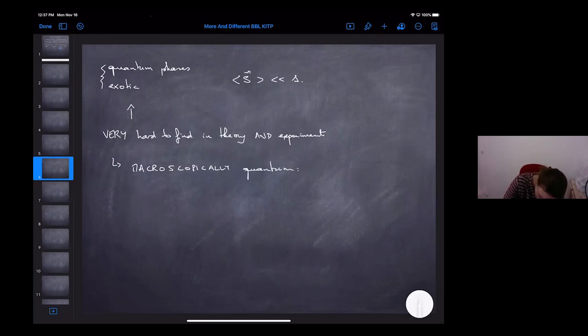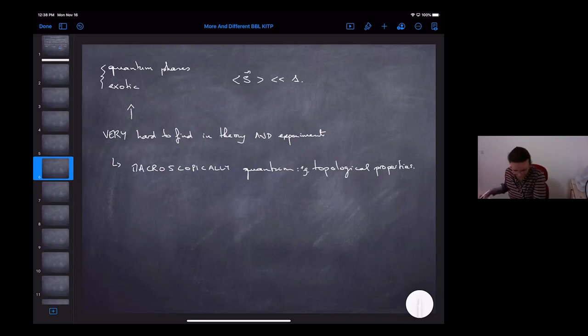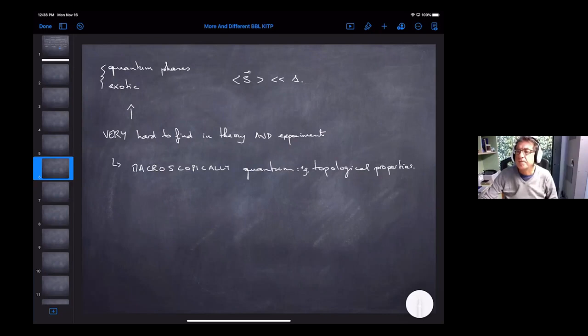So that there are many quantum fluctuations in them. But it turns out that these are very hard to find both in theory and experiment. But they're particularly fascinating because they can lead to microscopically quantum physics appearing at the macroscopic level.